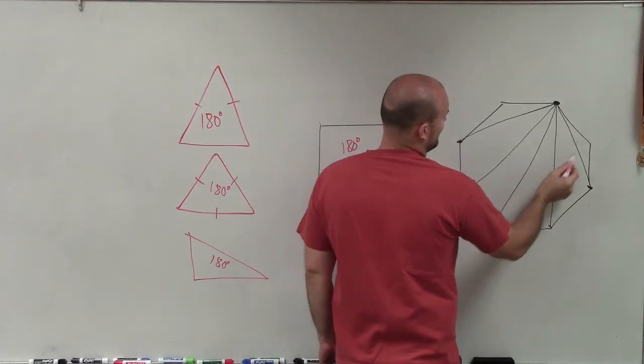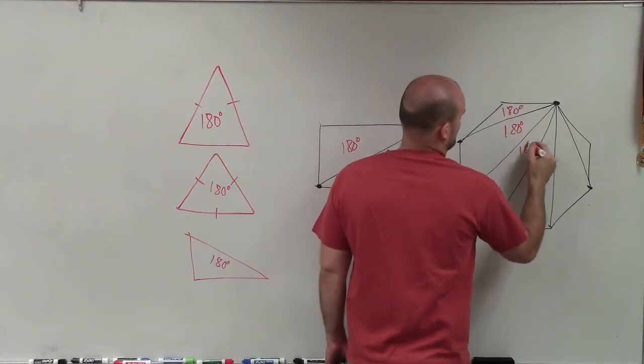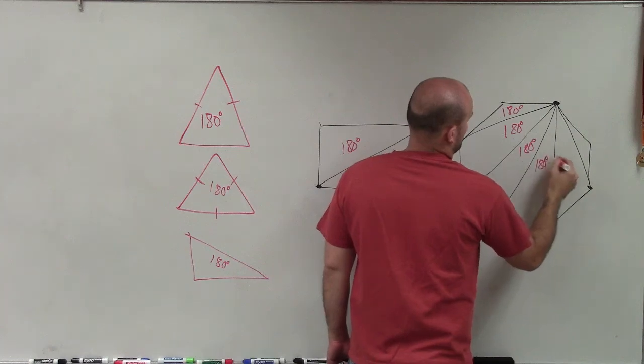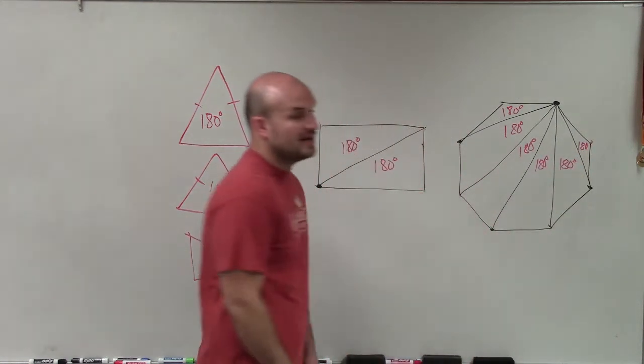Here, I have 1, 2, 3, 4, 5, 6. So there I have six sides.